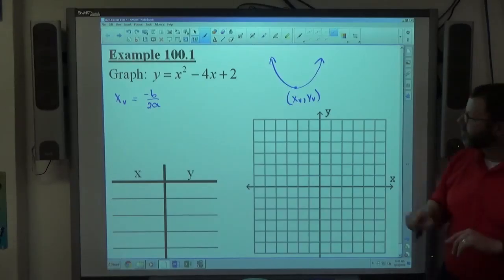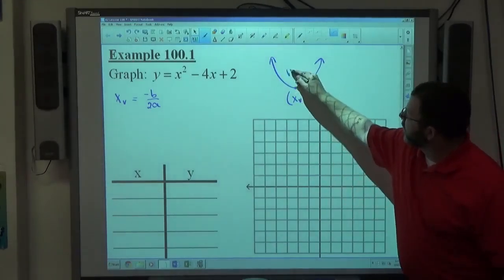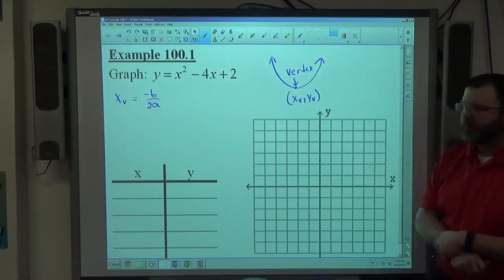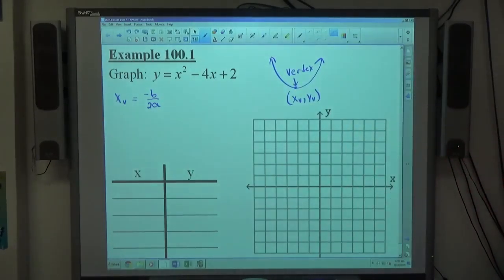Negative b over 2a. Alright. This is the vertex here. Alright. Its coordinates are x sub v, y sub v, and the x sub v part of that is simply negative b over 2a.